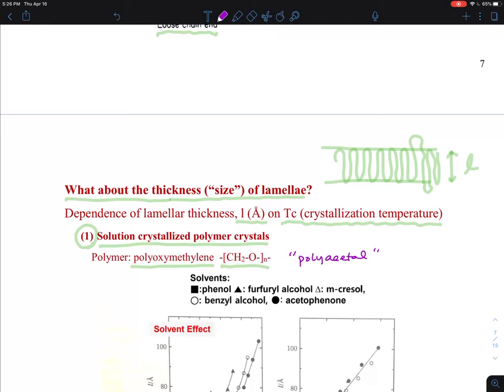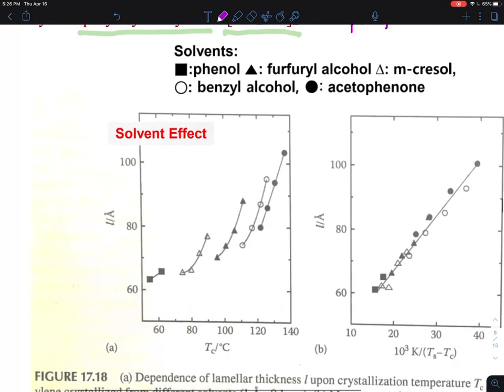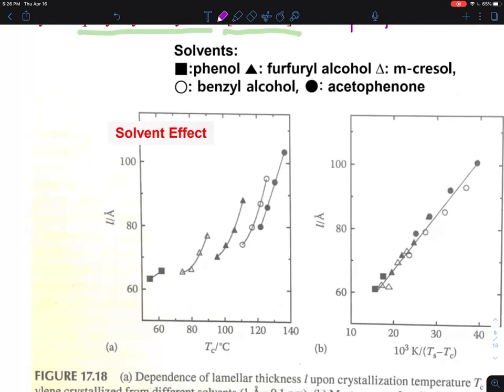It's one of the polymers that we are using for making some plastic gears like this. Gears, moving parts. The surface is a little bit slippery and that's why people are using it. So what you see here is they are using different solvents with the polyacetal. These are the different solvents shown up here.